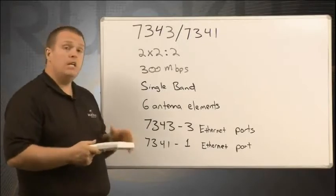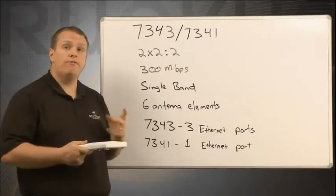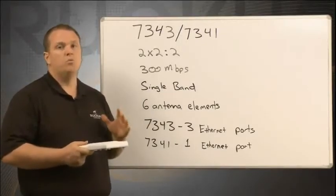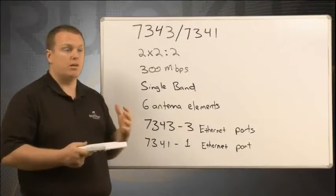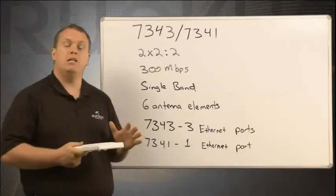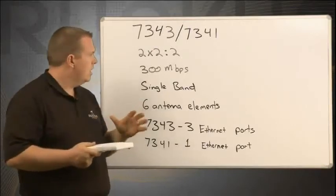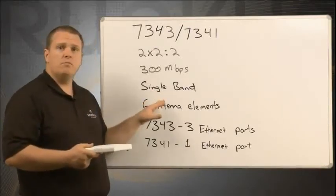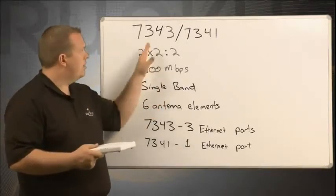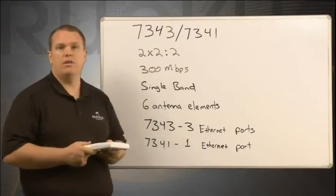If you need mesh or to serve 5 GHz clients, you really need to choose the 7363. If you don't ever anticipate needing those two services, then you can save yourself some money and get the single band 7343 or 7341.